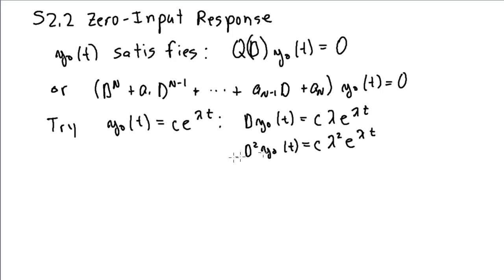I can factor out all these c terms everywhere I have a D that will actually be replaced with a lambda. Lambda to the n minus 1 plus a n minus 1 lambda plus a n, and then I keep the e to the lambda t. That factors out as well as equal to zero.